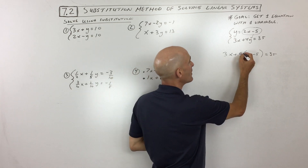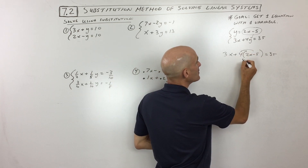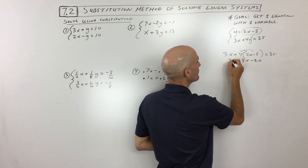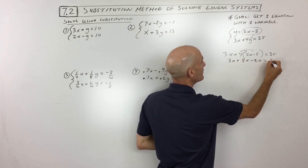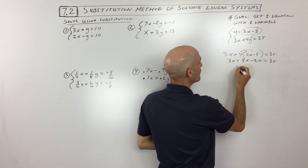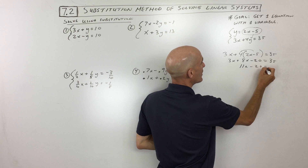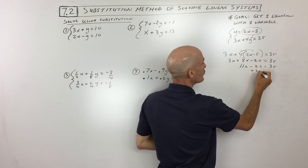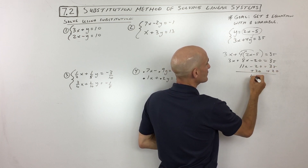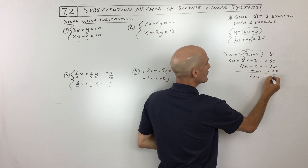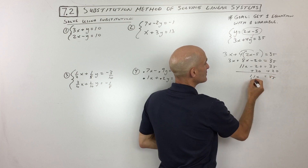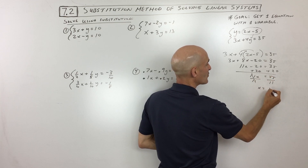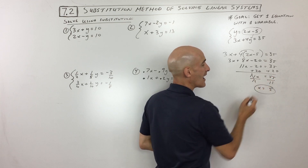We're going to distribute the 4, so that's 8x minus 20. Bring down the 3x, and we've got 11x minus 20. Add the 20 to both sides to get the variable by itself. Divide by 11, because we just want to get x by itself. So x equals 5.